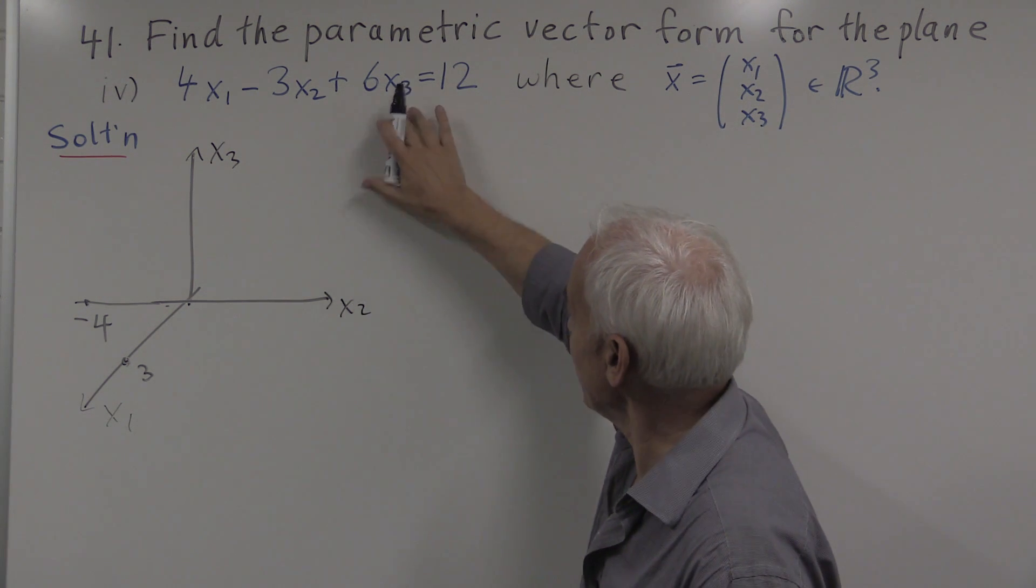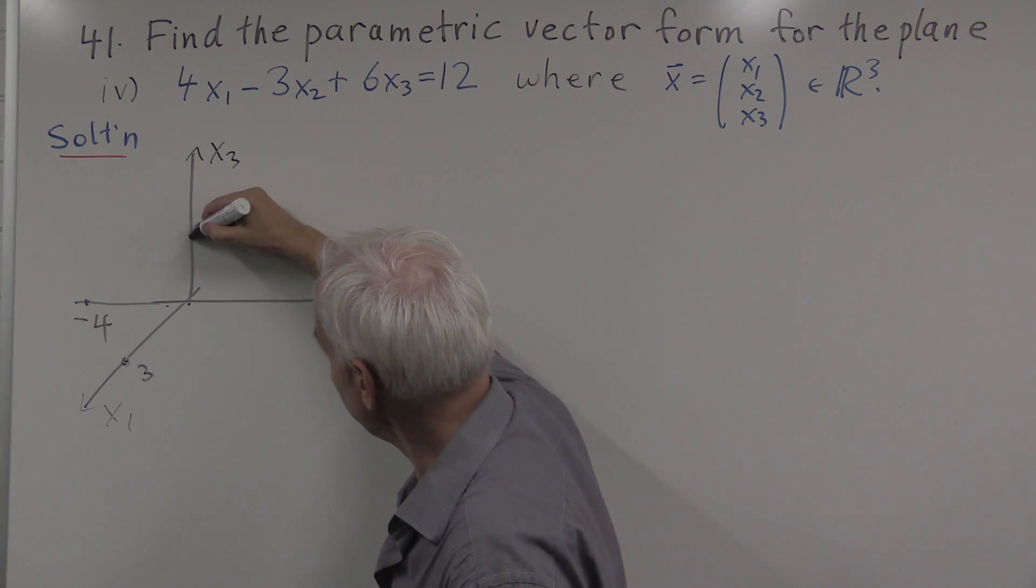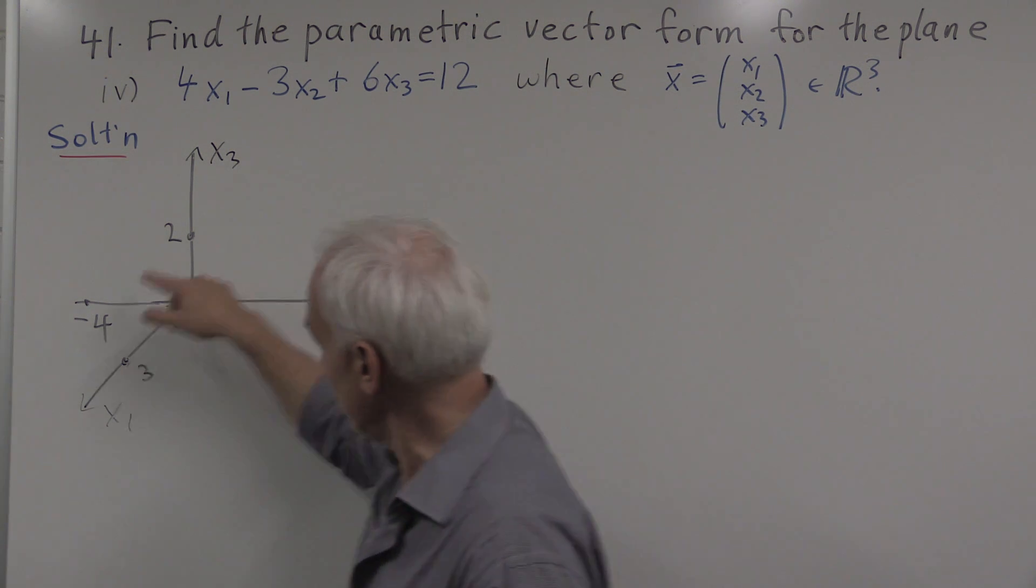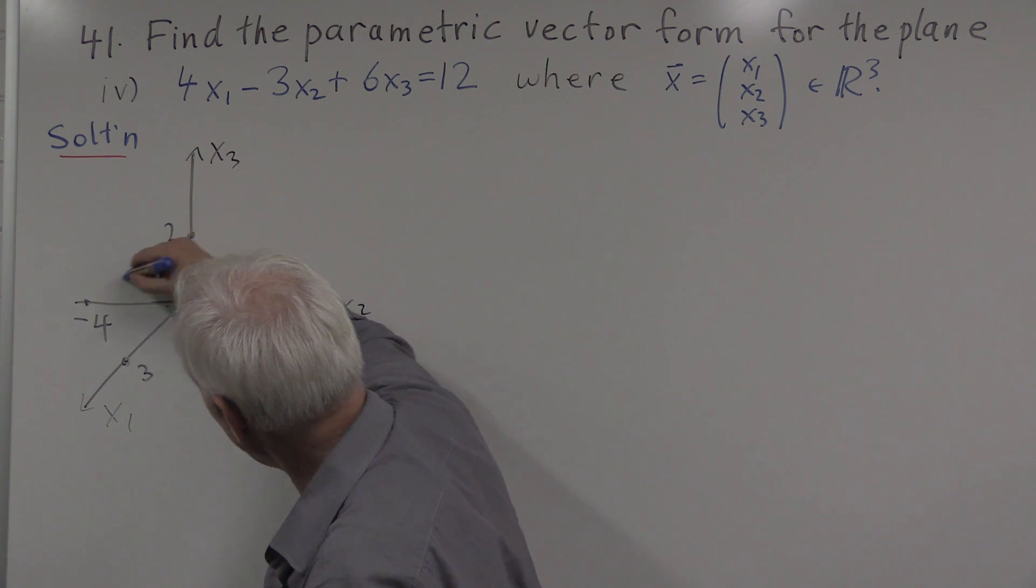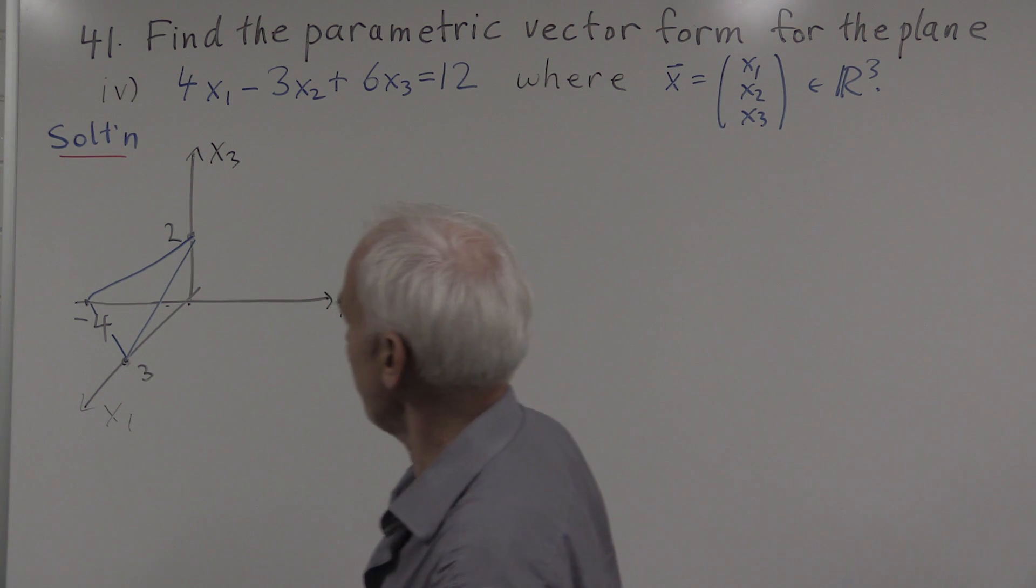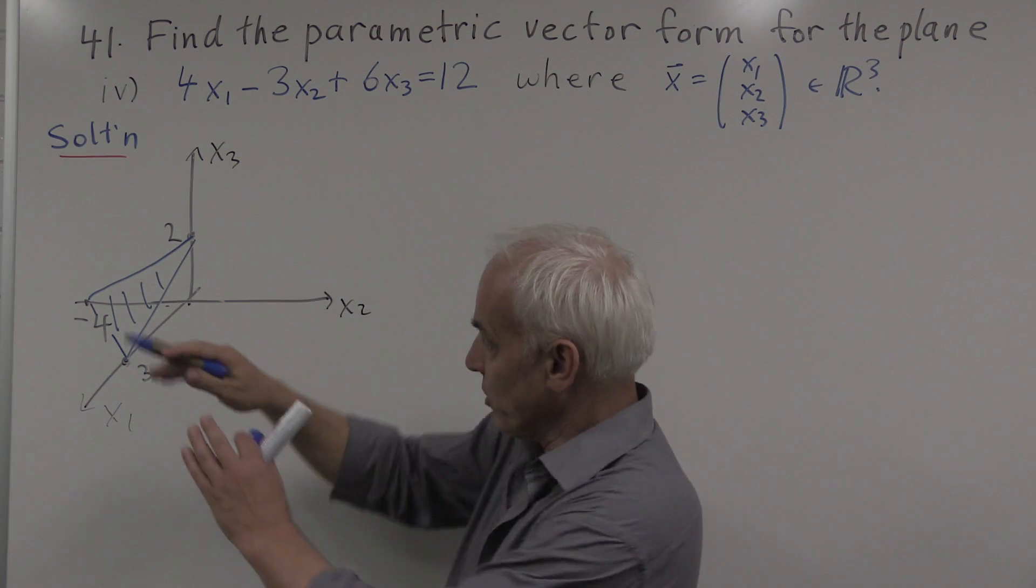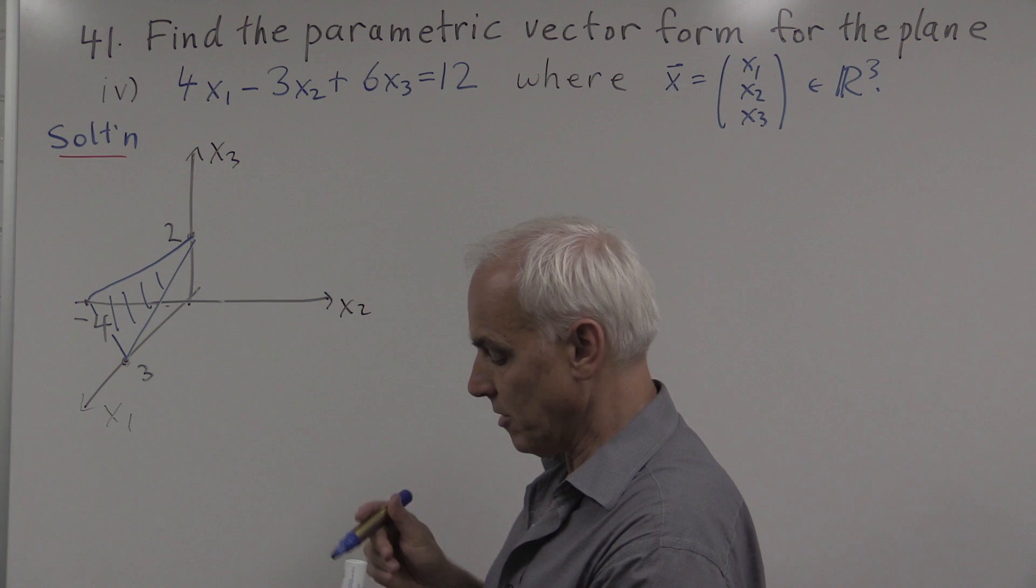And similarly, to find the x3 intercept, we would set x1 and x2 equal to zero, giving x3 equals two. So it's a plane that goes through those points. We could represent it with a little triangle connecting those three points on the three axes. It's that plane that's determined by that triangle, but of course it extends beyond. It's actually like an extended sheet of paper.